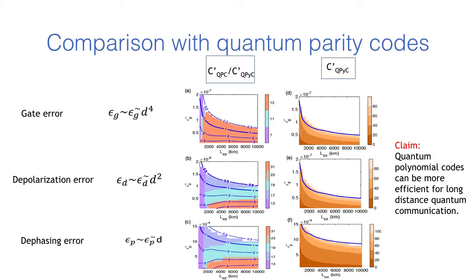Here we identify the parameter regimes where quantum polynomial codes perform better than qubit based quantum parity codes. Firstly in our error model we have assumed operation errors increase as a function of dimension of the qudit d. More precisely we assume gate error scales as d to the power 4, depolarization error scales as d squared and dephasing error scales as d. We plot the ratio of the cost coefficient of the quantum parity codes and quantum polynomial codes in the contour plot. The region below the contour line one shows the region where polynomial codes perform better than quantum parity codes.